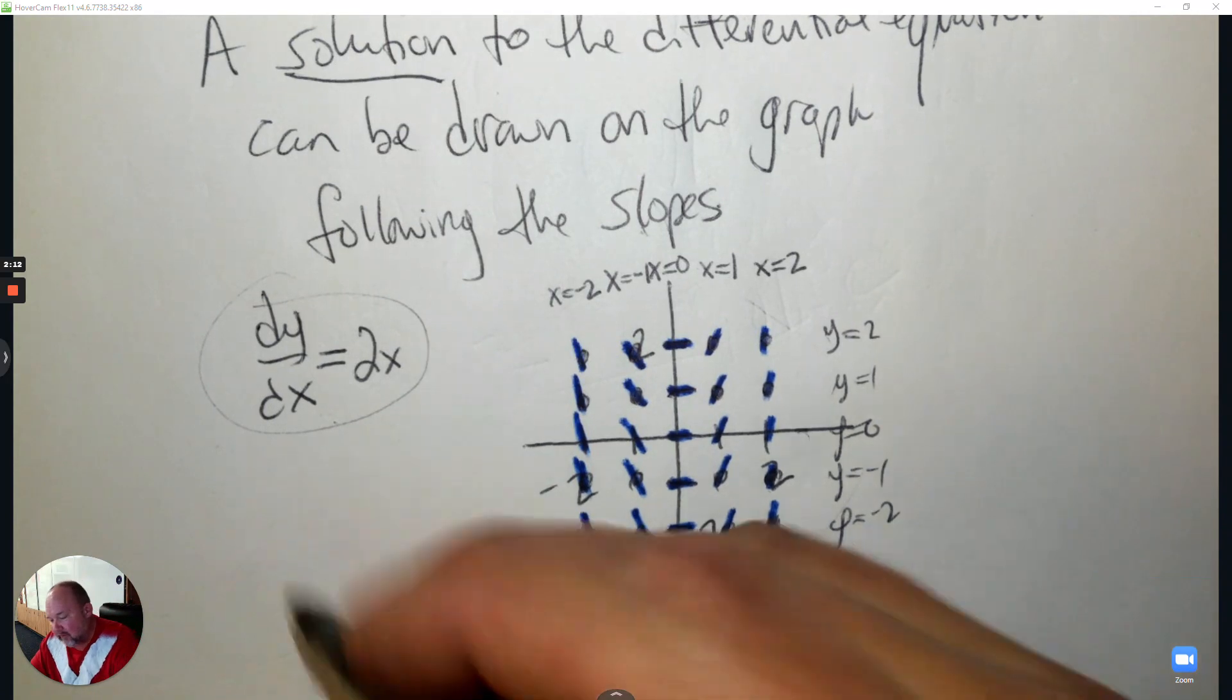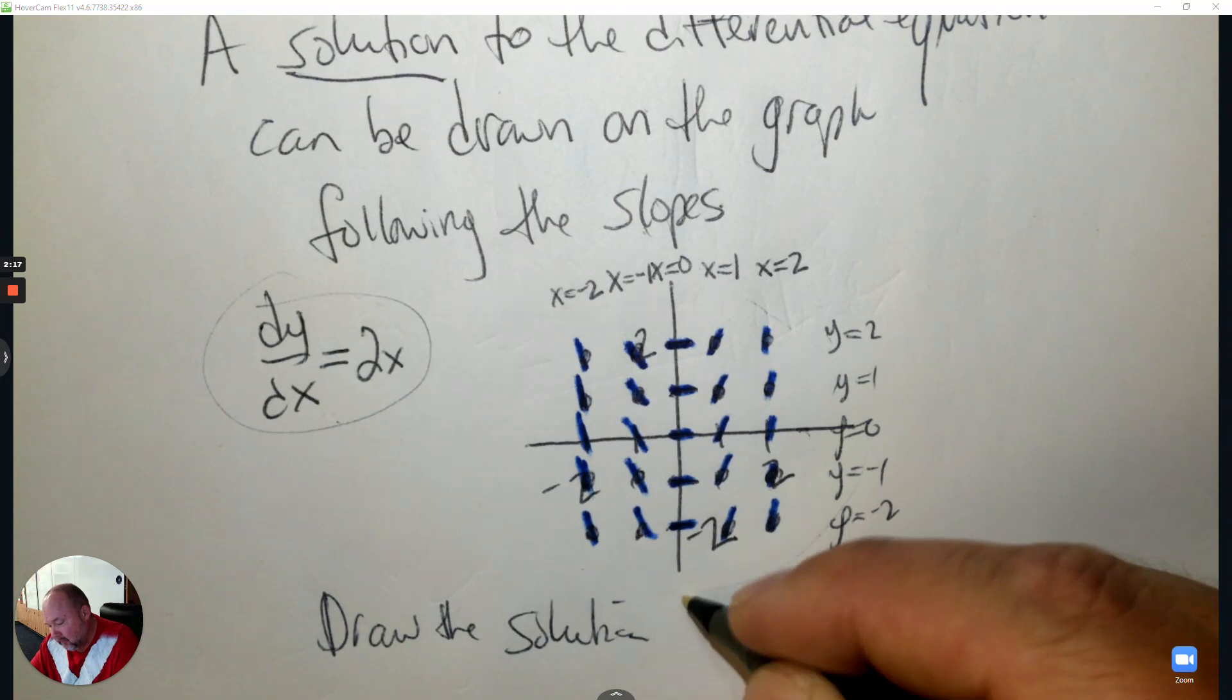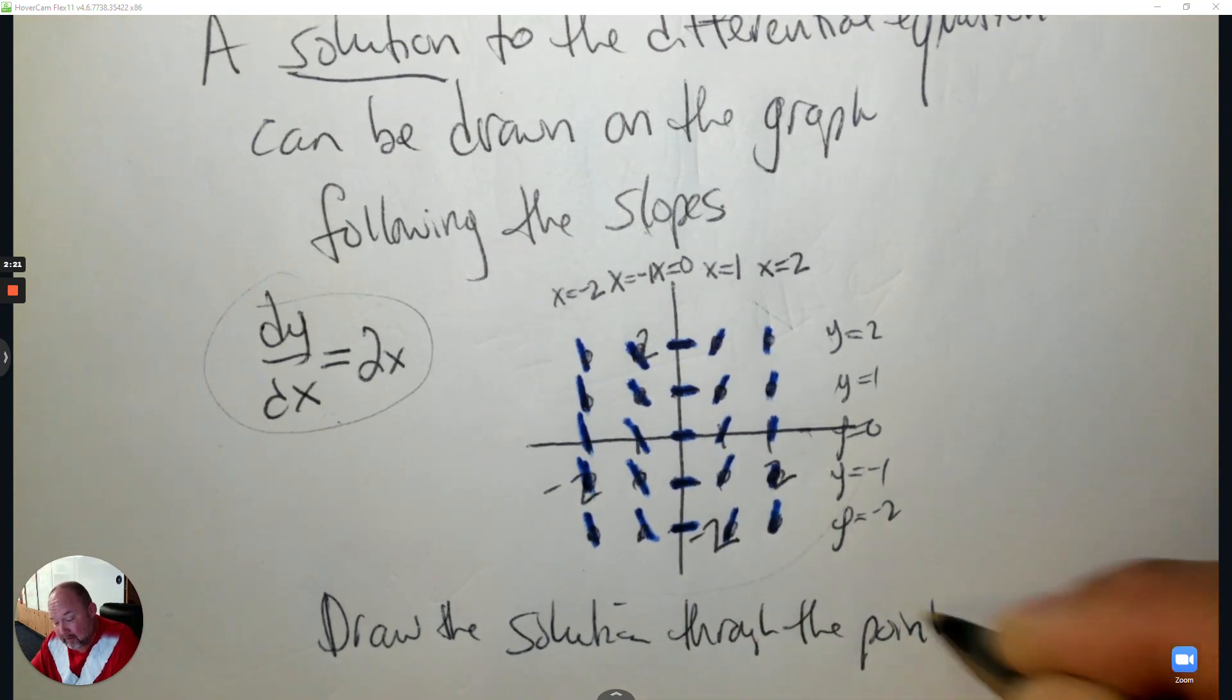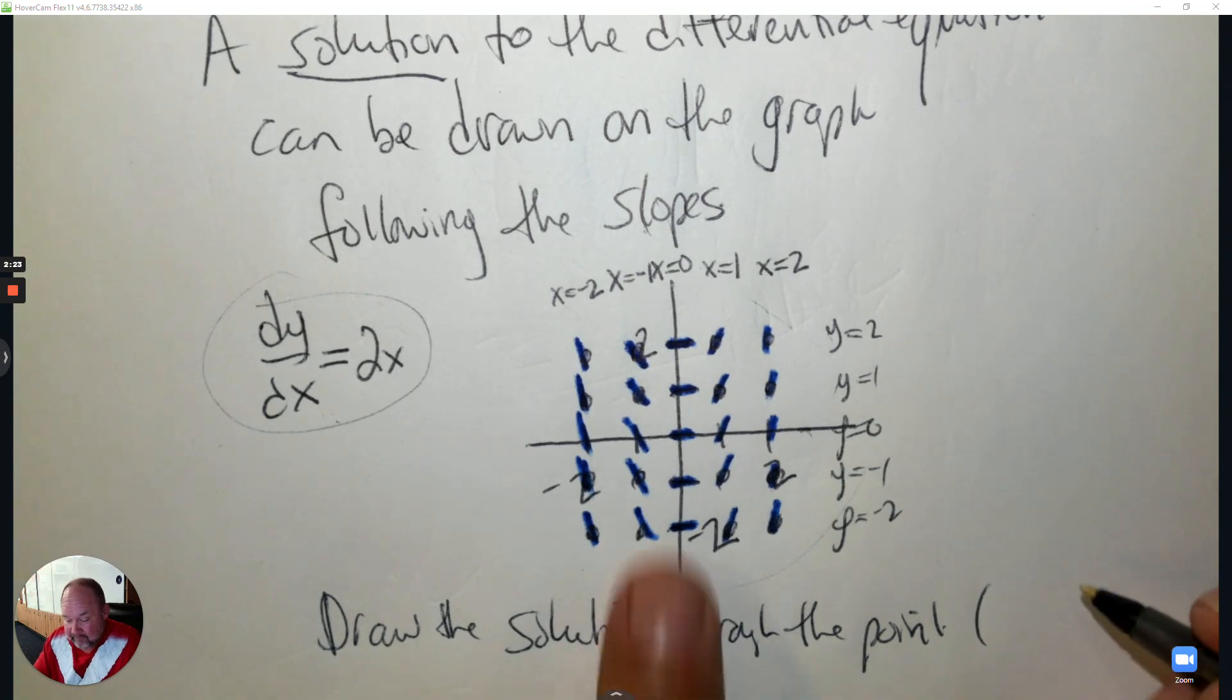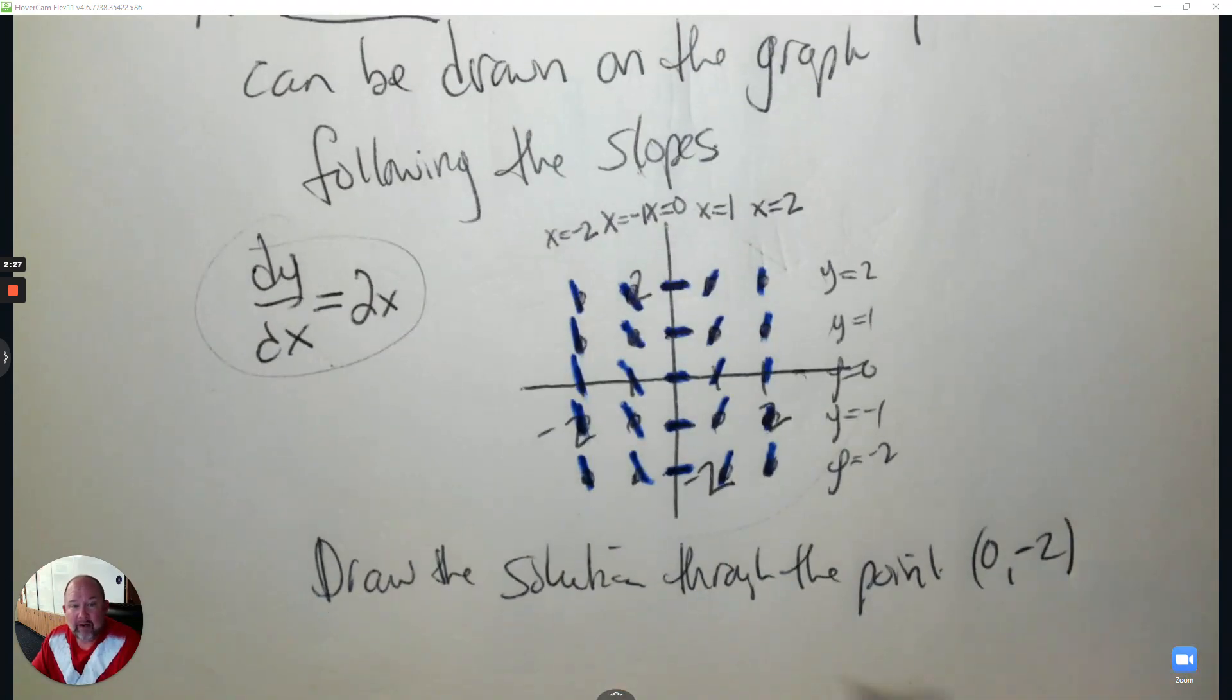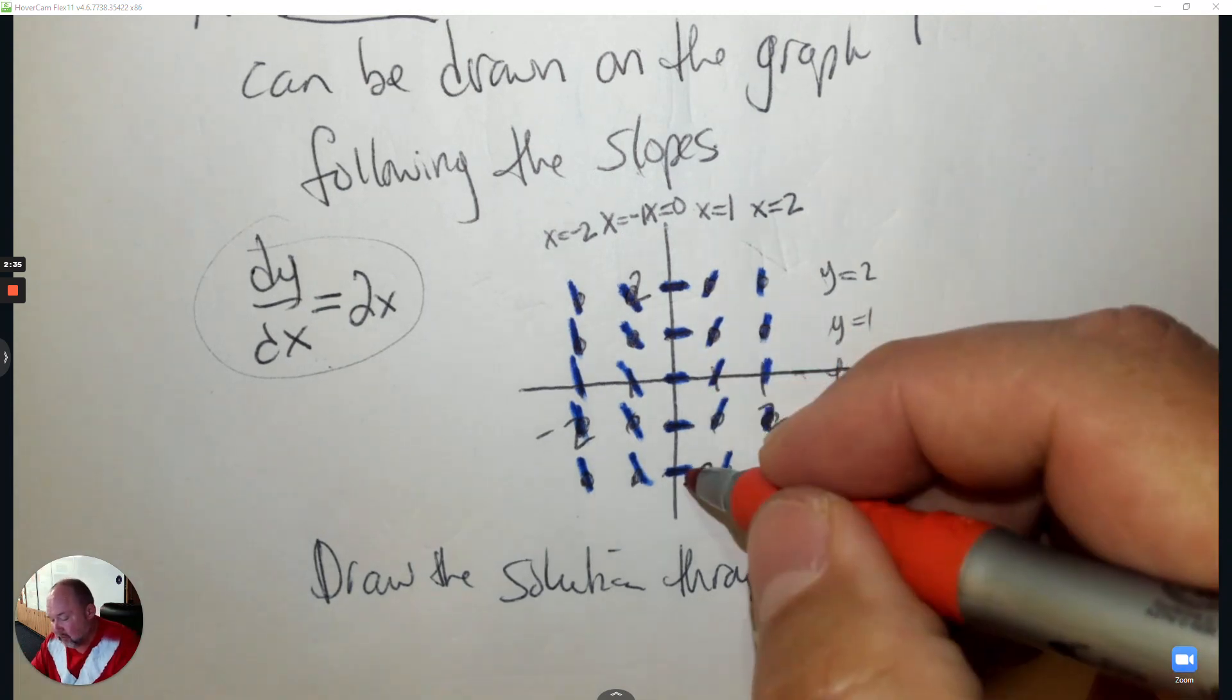If I said draw the solution through a point, I'd have to pick a point. Let's say I draw it through 0 and negative 2. I'd find 0 and negative 2. Let me get another color here. So 0 and negative 2, right here.